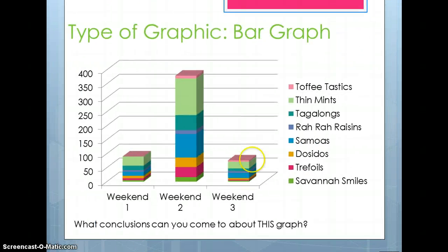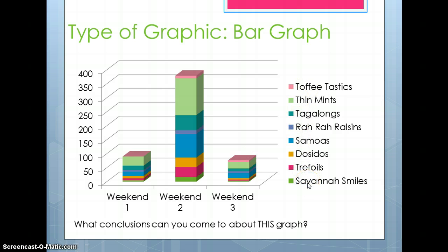Here's another one — this is a bar graph. Again, it's all about weekend sales for Girl Scout cookies: Weekend 1, Weekend 2, Weekend 3, with all the different kinds of cookies — eight different kinds — there for you to see. Think about what conclusions you can come to about this graph. I'm not going to let you sit on this too long because we're actually going to do this one when we come back to class.